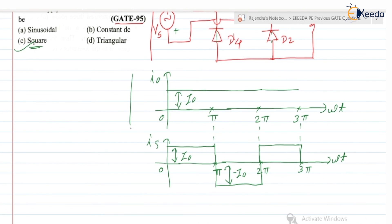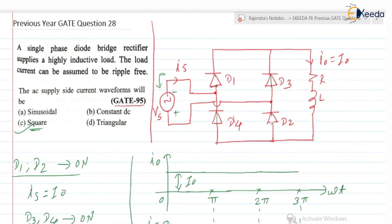So point to be noted, when D1, D2 are in the on state at that time, Is is equal to minus I0. So this is about question number 28.